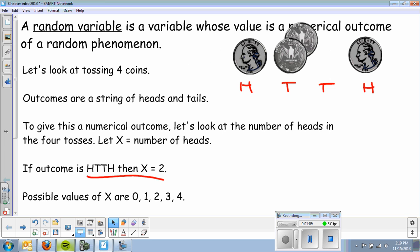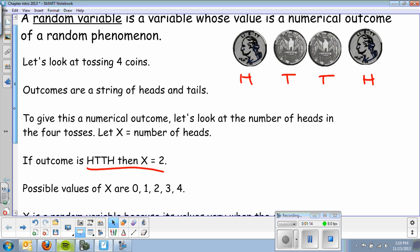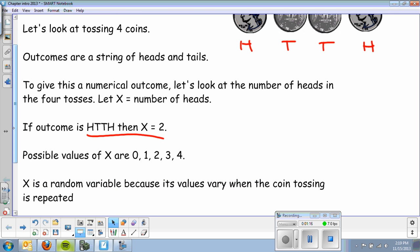Alright, so we get into that kind of periodically, but that should be kind of a refresher over something we talked about in the last chapter. X is a random variable because its values vary when the coin tossing is repeated. So, again, it's random.